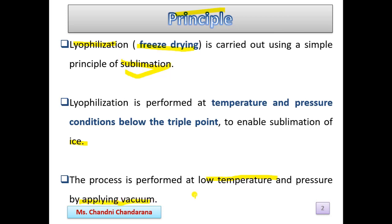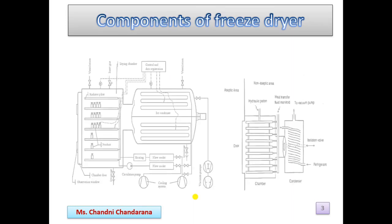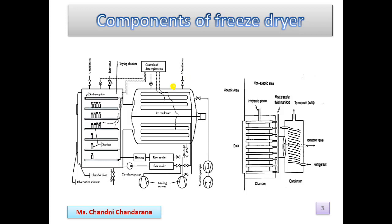The components of a freeze dryer (lyophilizer) include: a drying chamber, a vacuum pump, a cooling system, an ice condenser, and electric coils. The process is carried out in an aseptic area, while certain components such as the condenser and vacuum pump are in the non-aseptic area. A refrigerant is also part of the system.